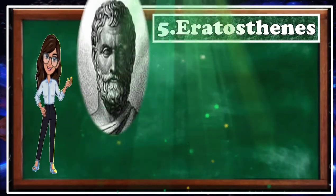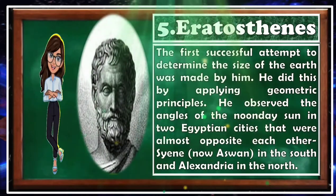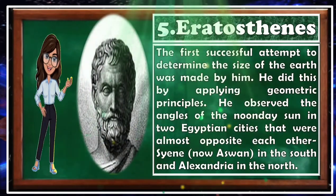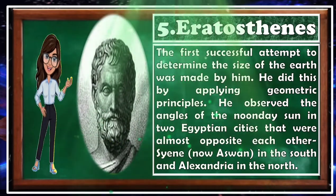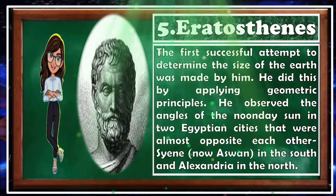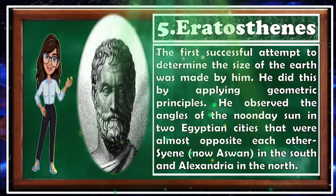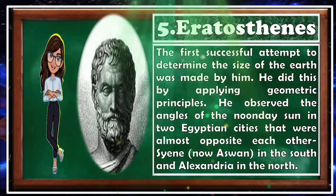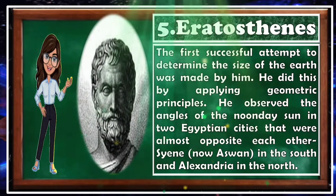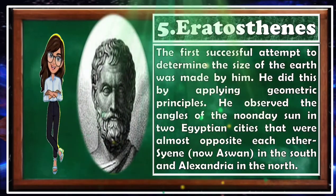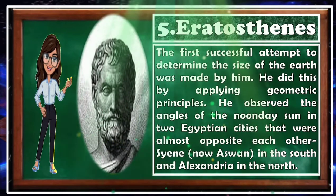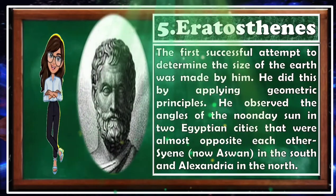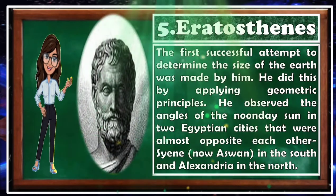The fifth Greek astronomer is Eratosthenes. The first successful attempt to determine the size of the Earth was made by him. He did this by applying geometric principles. He observed the angles of the noonday sun in two Egyptian cities that were almost opposite each other — Syene, now Aswan, in the south, and Alexandria in the north.